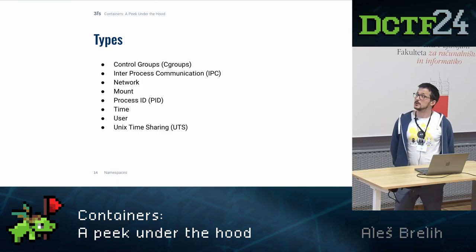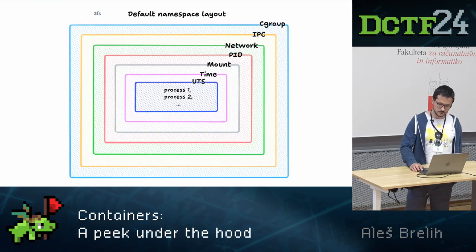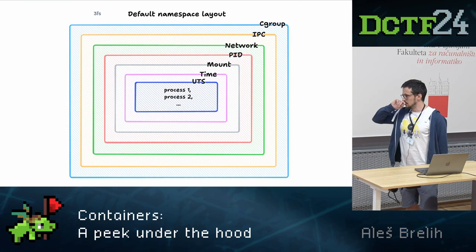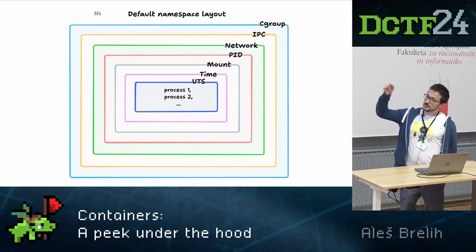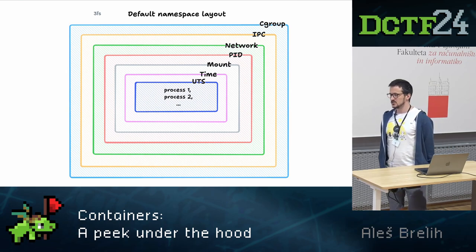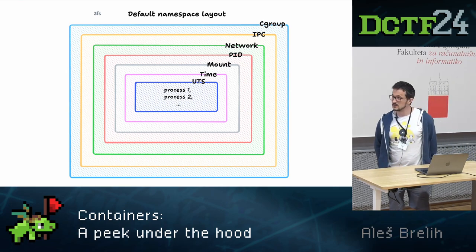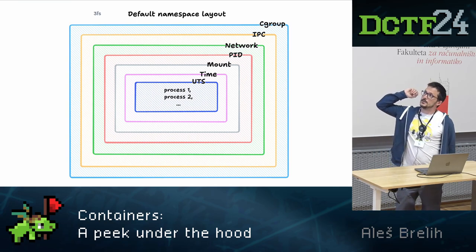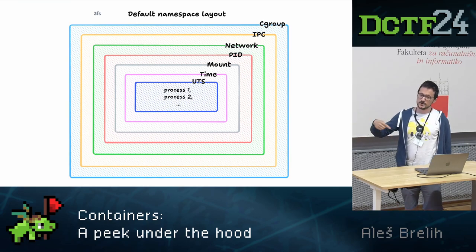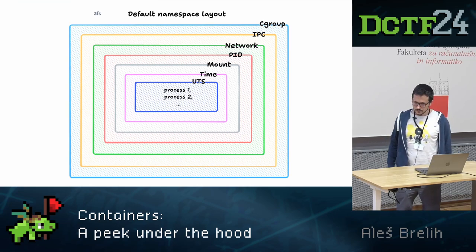We have multiple types of namespaces. Two I'll show today are the UTS (Unix Time Sharing) namespace and the process ID namespace. The UTS namespace allows us to change the hostname without affecting the host. The PID namespace isolates process IDs — when you run a container, you don't see processes running on the host. By default, when systemd is run it gets assigned to the root namespaces, and each process spawned from there inherits the parent namespace, which is why every process on your host can see everything.